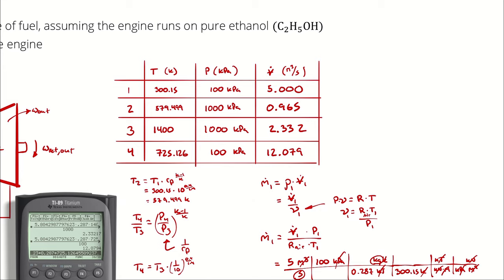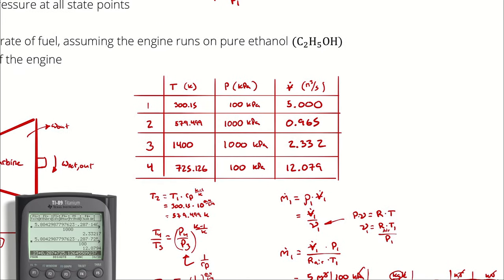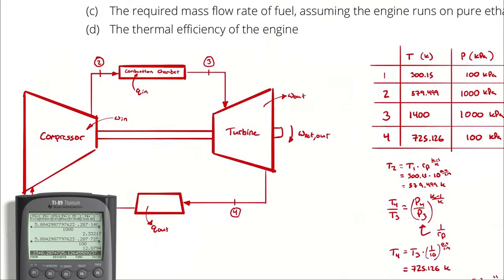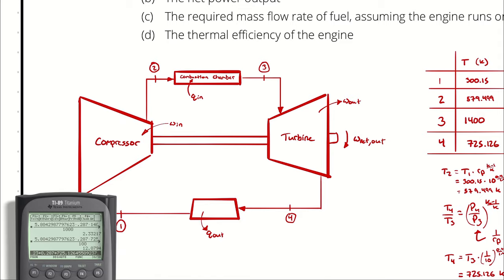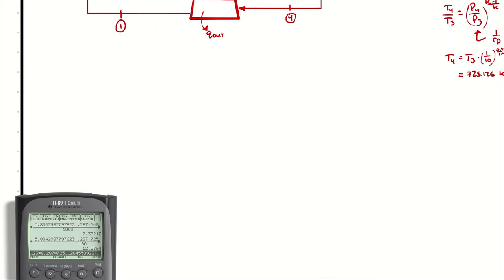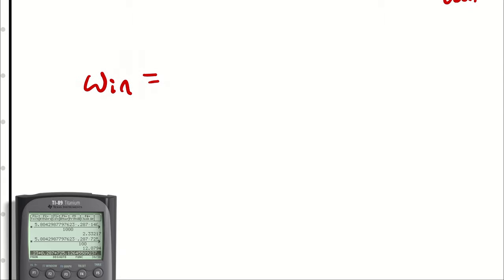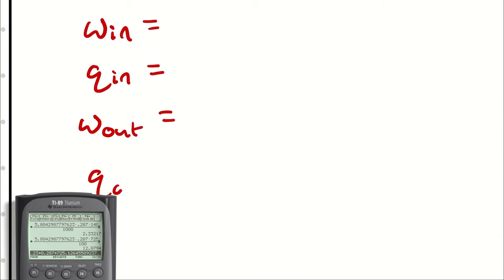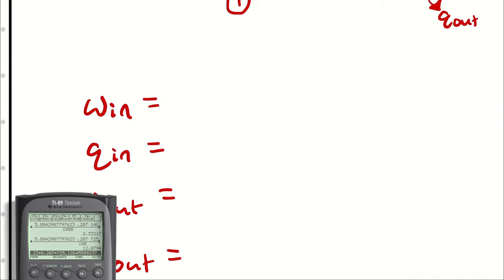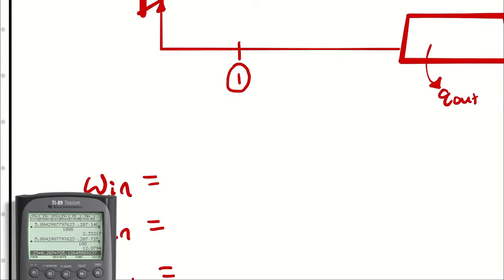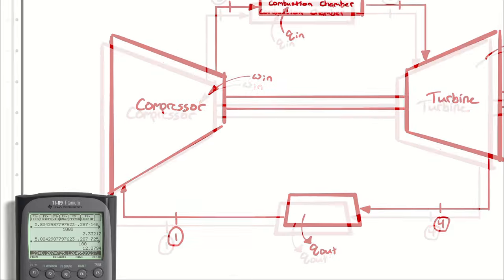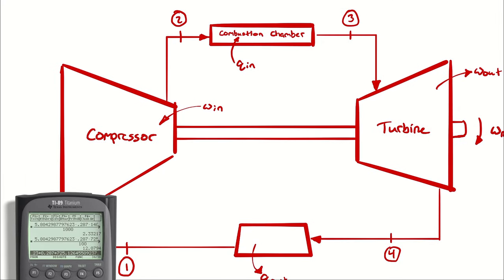That was fun — nothing builds character like calculating things you don't need. Now, rather than jumping straight to net power, I want to first calculate the specific work in, specific Q in, specific work out, and specific Q out. This isn't strictly necessary, but it's a good opportunity to explore the cycle more fully, and since this is a stand-in for all simple Brayton cycles, we might as well be exhaustive in our analysis.